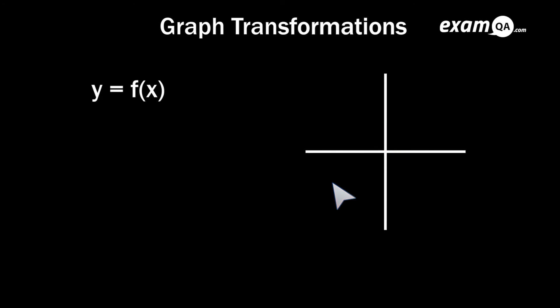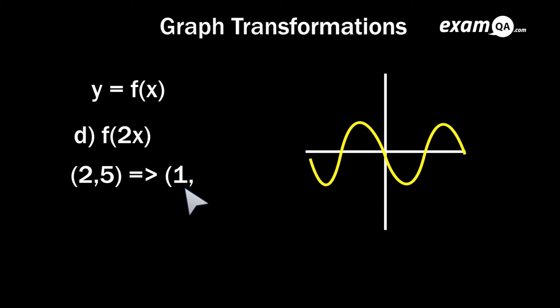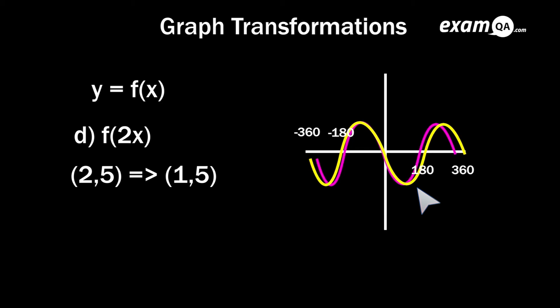Now for f(2x) — it's in the brackets with the x, so it's going to affect the x-axis. With times 2 you might expect it to stretch, but it does the exact opposite: it actually squeezes in. You divide your x coordinates by 2 instead of multiplying by 2. If you wanted to stretch it, you'd use a fractional value, for example f(½x) would actually stretch it. Looking at a coordinate: divide the x value by 2, giving us 1, and the y stays the same. On the sine graph, the graph is squashed in the x direction — rather than finishing its first period at 360, it finishes at 180.